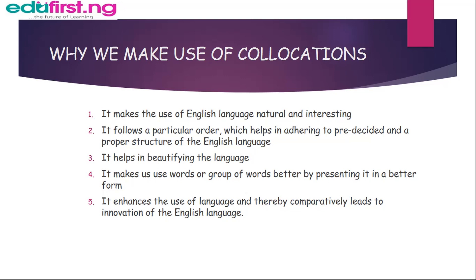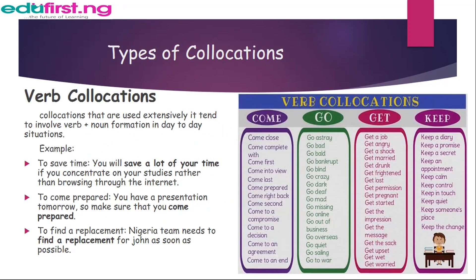Types of collocation. Number one: verb collocation. Collocations that are used extensively tend to involve a verb plus noun formation in day-to-day situations. For example, 'to save time': you will save a lot of time if you concentrate on your studies rather than browsing the internet.